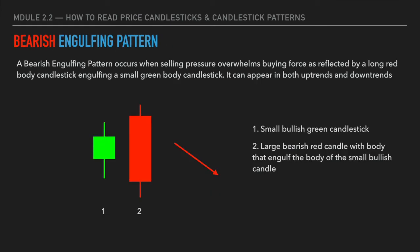The opposite to the bullish engulfing pattern is known as the bearish engulfing pattern. Similar to the bullish engulfing, a bearish engulfing pattern is a combination of two candlesticks: one small green bar and one large bearish red candle bar whose body engulfs the body of the small green bar. This pattern shows the potential exhaustion of buyers, and more sellers jumping into the market creates selling pressure that pushes the price lower — so the market turns bearish and the price has a high probability of going lower in the future.